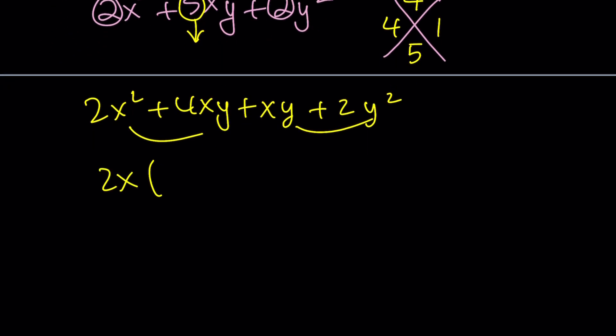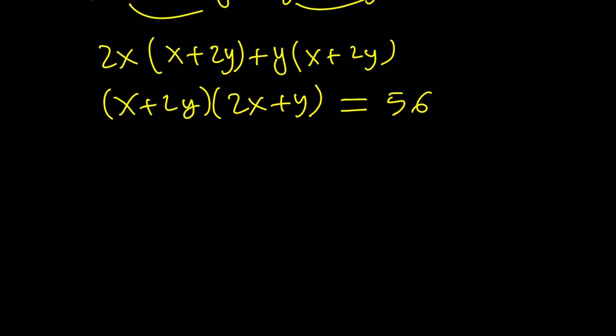Take out 2x, you get x + 2y, and then the common factor is y, you get x + 2y. Which means you have (x + 2y) multiplied by (2x + y). And this is equal to 56.